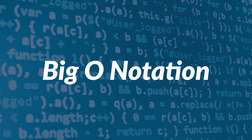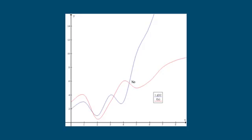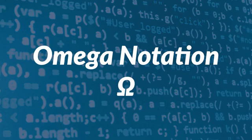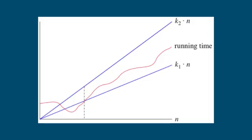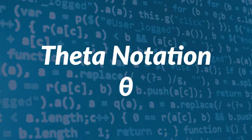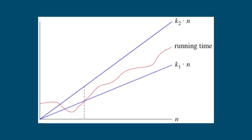First is Big O notation: O(n) is the formal way to express the upper bound of an algorithm's running time. It measures the worst case time complexity, or the longest amount of time an algorithm can possibly take to complete. Second is omega notation: Ω(n) is the formal way to express the lower bound of an algorithm's running time, measuring the best case time complexity. And the last one is theta notation: Θ(n) is the formal way to express both the lower bound and the upper bound of an algorithm's running time.